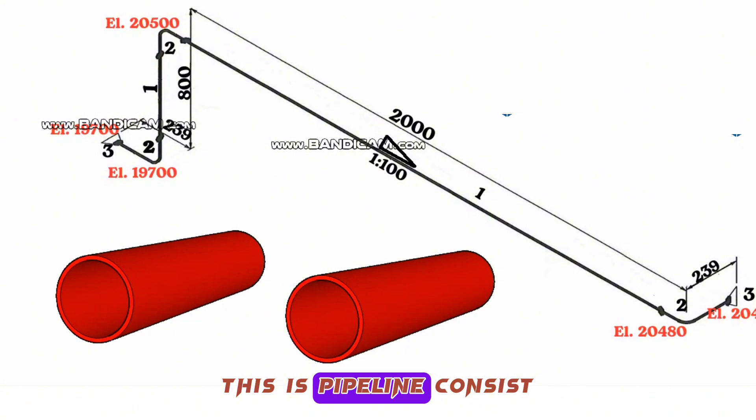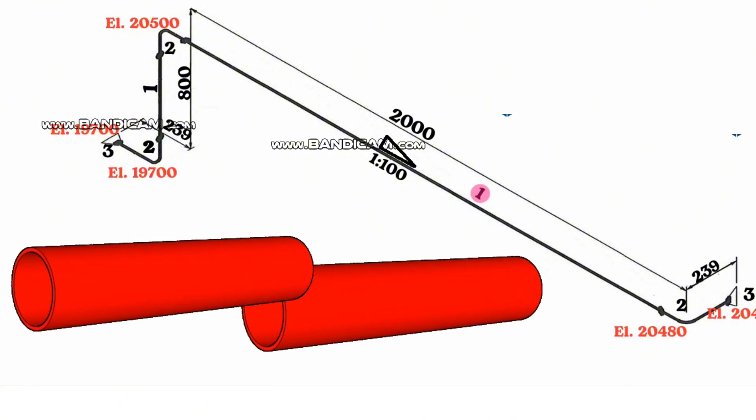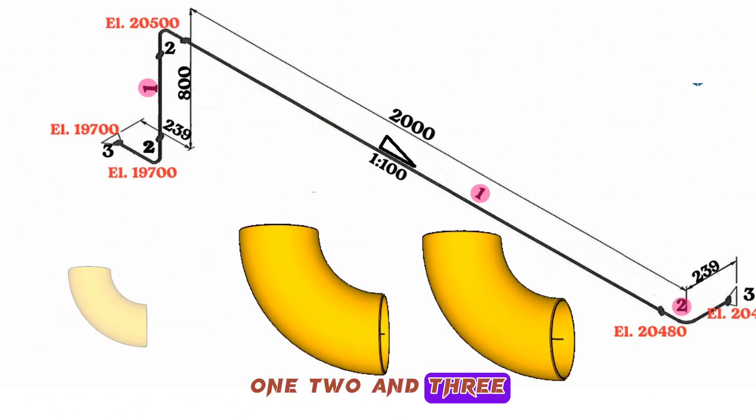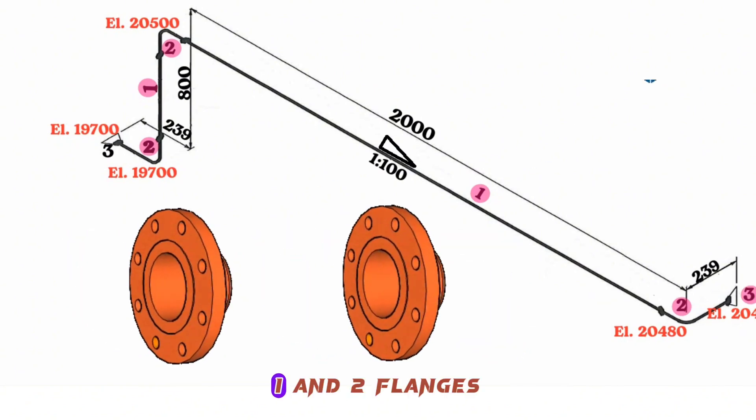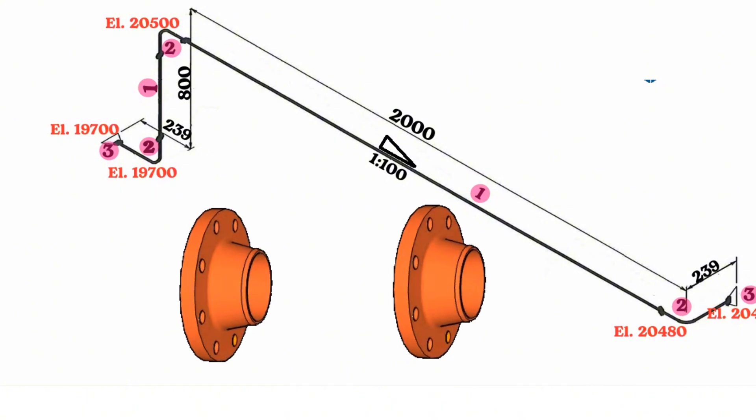As you can see this pipeline consists of two pipe pieces, three 90-degree pipe elbows, and two flanges.